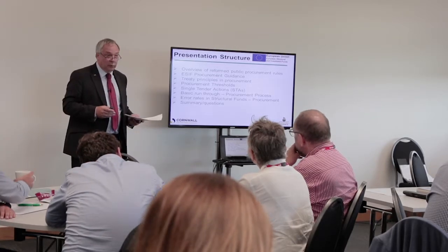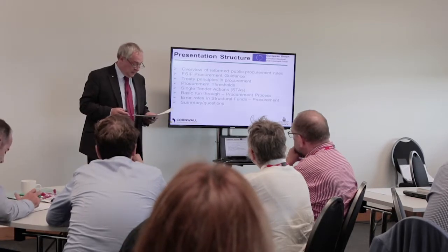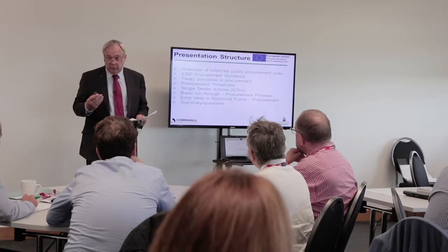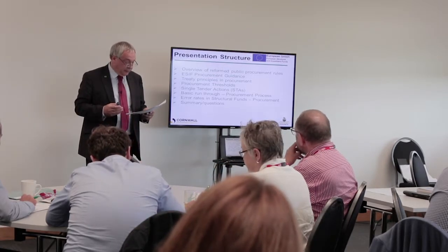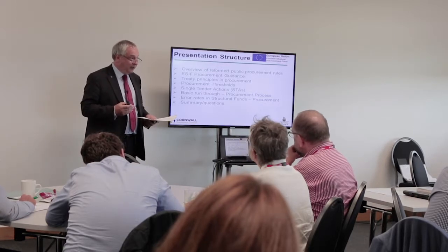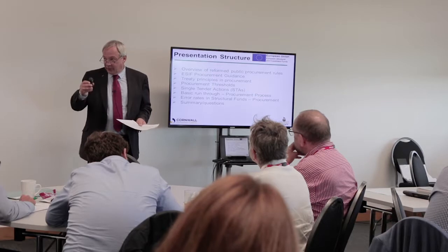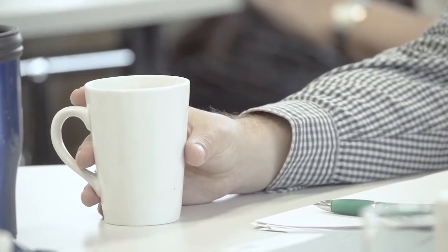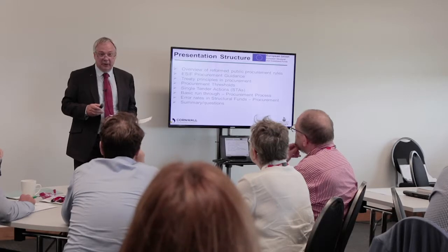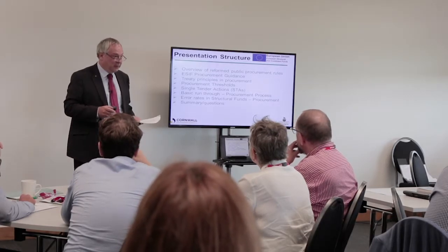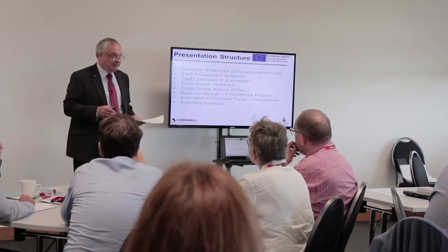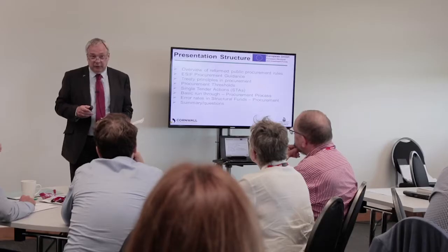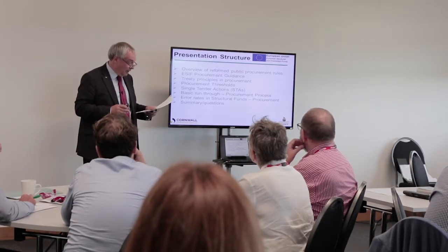We're going to look at the treaty principles of procurement. If you follow the four treaty principles, you will not go too far wrong. We're going to look at the thresholds to which rules apply, because there is a question of proportionality. Buying a small presentation clicker is clearly not the same as entering into a £50 million construction contract. There's a level of proportionality to be applied within the rules. Funnily enough, low-level procurements quite often cause the most problems in my experience, because people assume they can go out and purchase things without going through any kind of process.